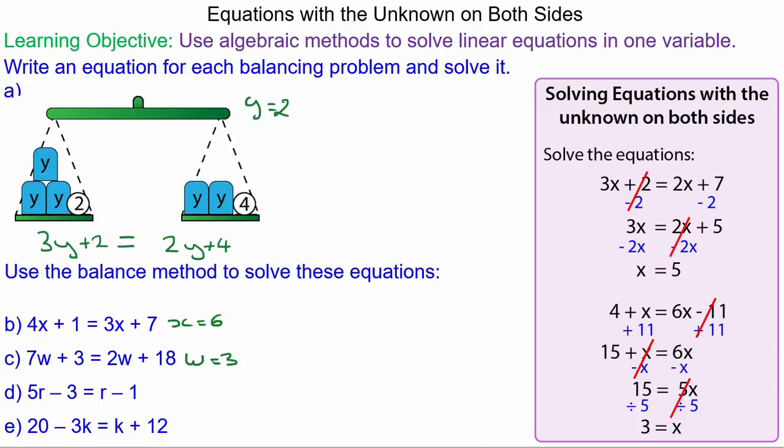So for question D, we have 5r minus 3 equals r minus 1. So we can take away r from both sides. r take away r is 0, and 5r take away r is 4r. Take away 3 equals negative 1, and we add 3 to both sides because negative 3 and 3 is 0, so 4r equals positive 2. And we can divide both by 4, so r will equal one-half.